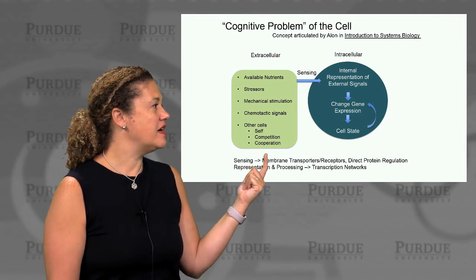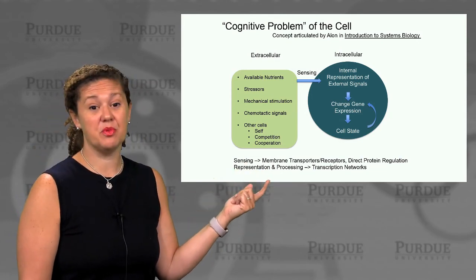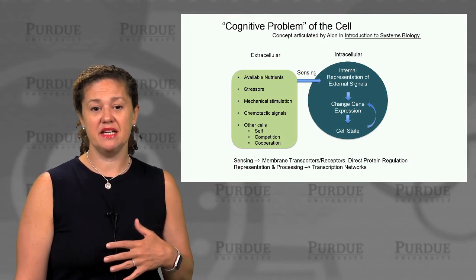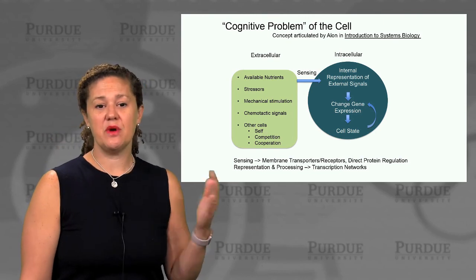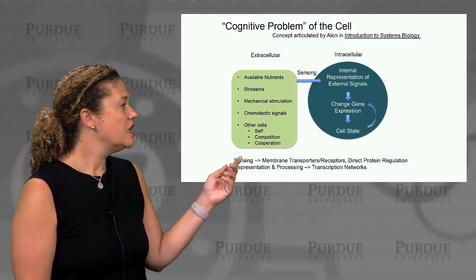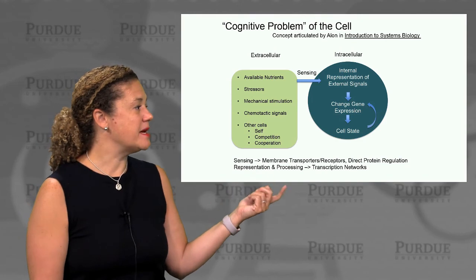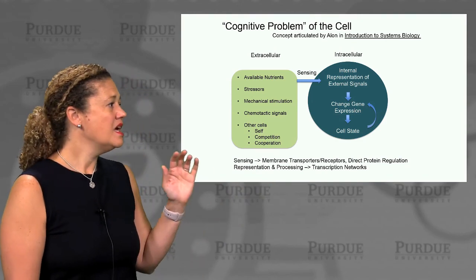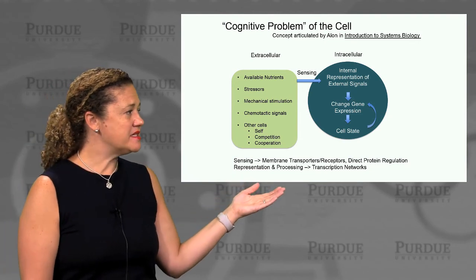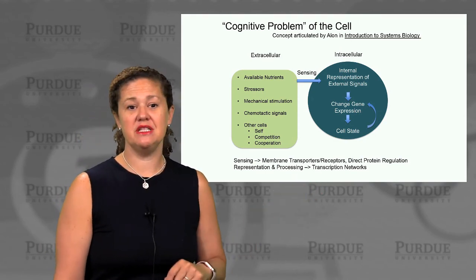The cell needs to adapt and adjust in order to survive optimally in its changing extracellular environment. That internal representation of extracellular signals must, among other things, change its gene expression in order to alter its cell state. That cell state also gets represented back and influences gene expression change as well. Sensing primarily happens through membrane transporters and receptors on the surface of the cell to direct protein regulation, and that representation and processing primarily happens through transcription networks.